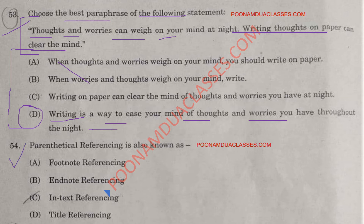Question number 54: Parenthetical referencing is also known as option C — in-text referencing. Parenthetical reference, also called in-text citations, are references within the text of your paper to source material.